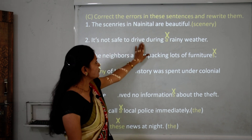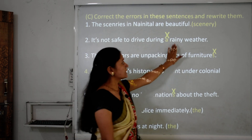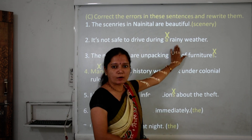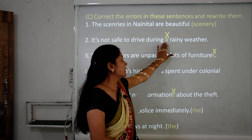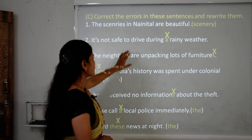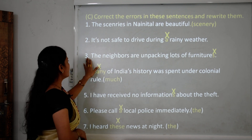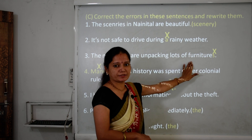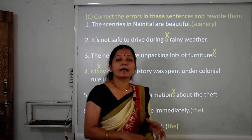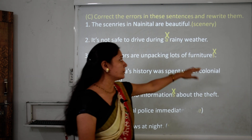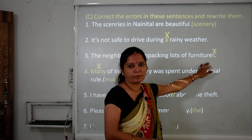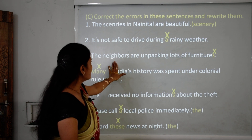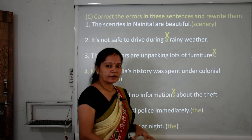Sentence 2: 'It's not safe to drive during a rainy weather.' Weather is uncountable, so we cannot use 'a' with it. We remove 'a.' Sentence 3: 'The neighbors are unpacking lots of furnitures.' Furniture is uncountable and has no plural form, so 'furnitures' is wrong. The corrected sentence is: 'The neighbors are unpacking lots of furniture.'